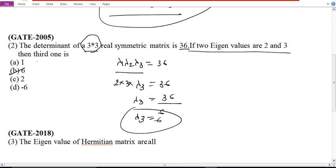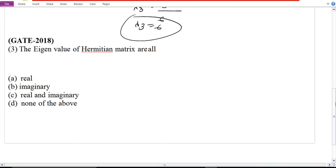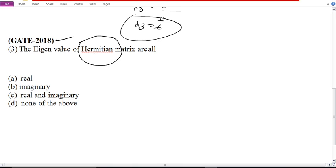And option B is correct. How simple these questions are! Look at GATE. Now, the third question which was asked in 2018. Look at the current question. The eigenvalues of a Hermitian matrix are only real. That's why the option is correct. See how simple these questions are. Matrices is a favorite topic in mathematics.